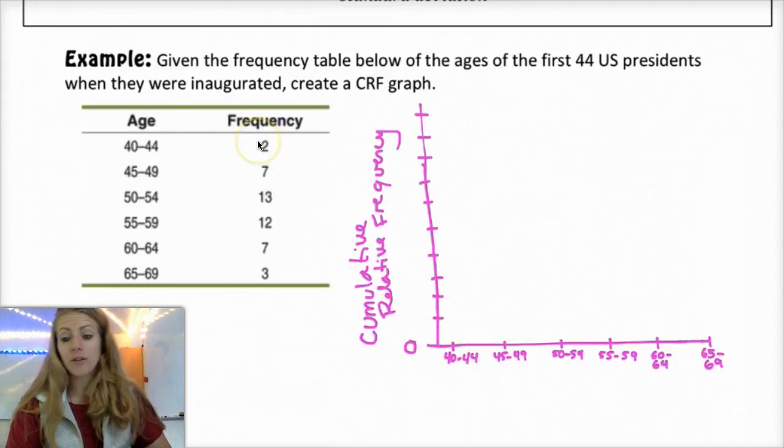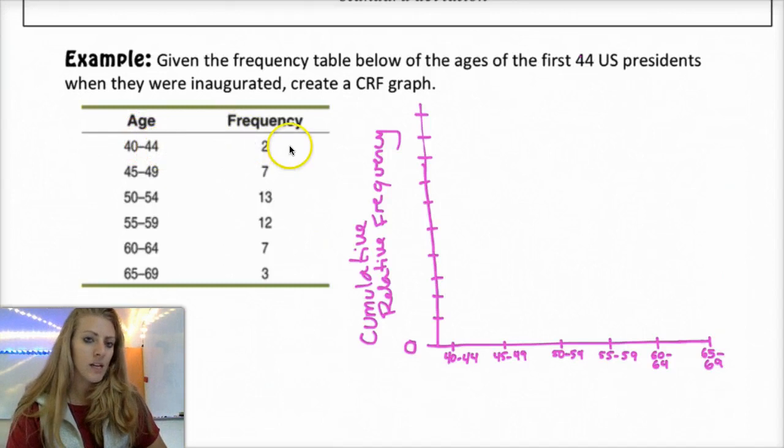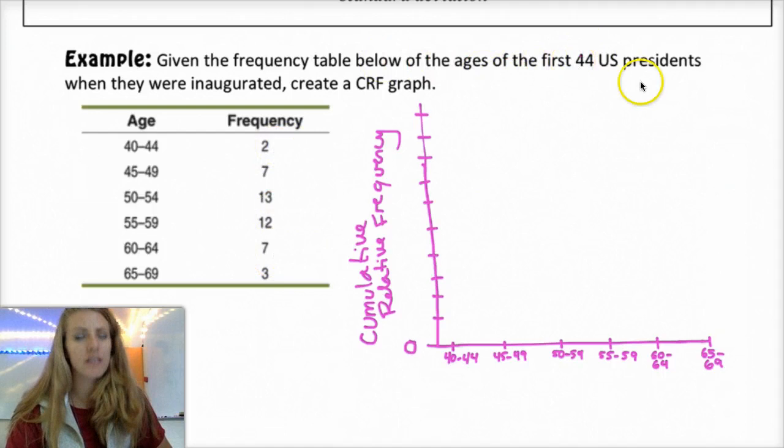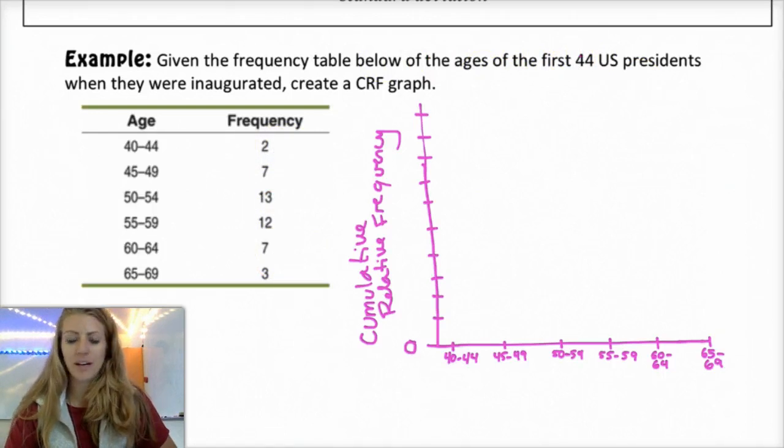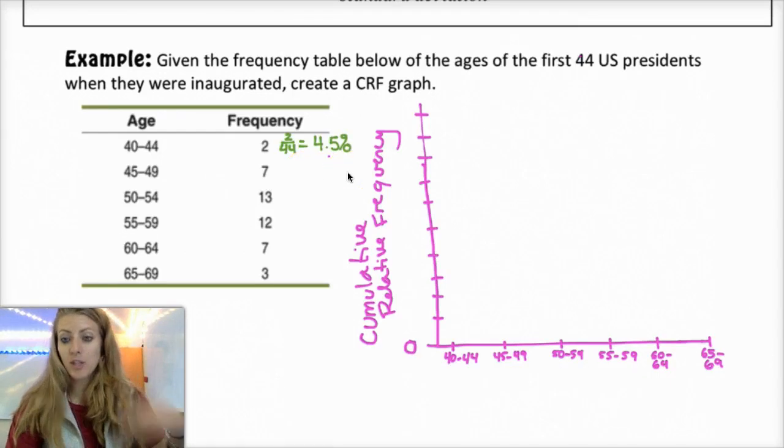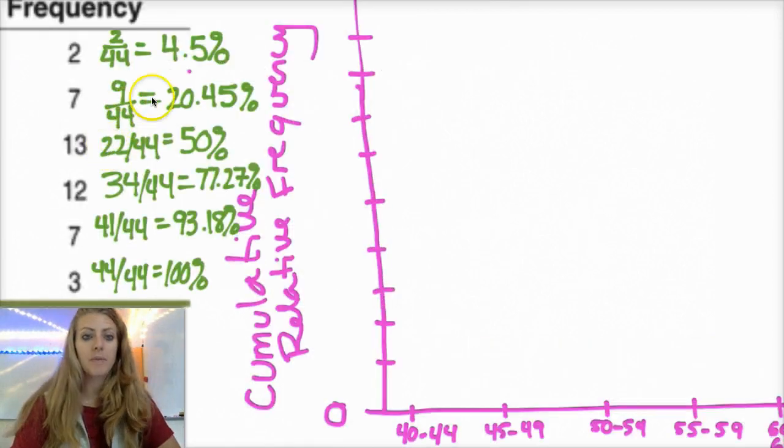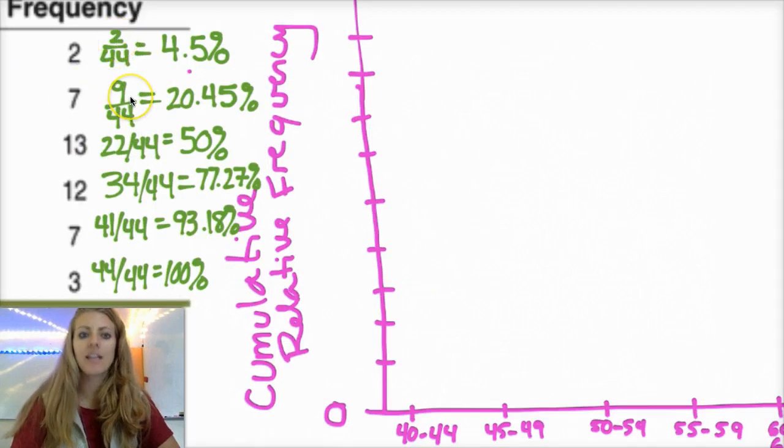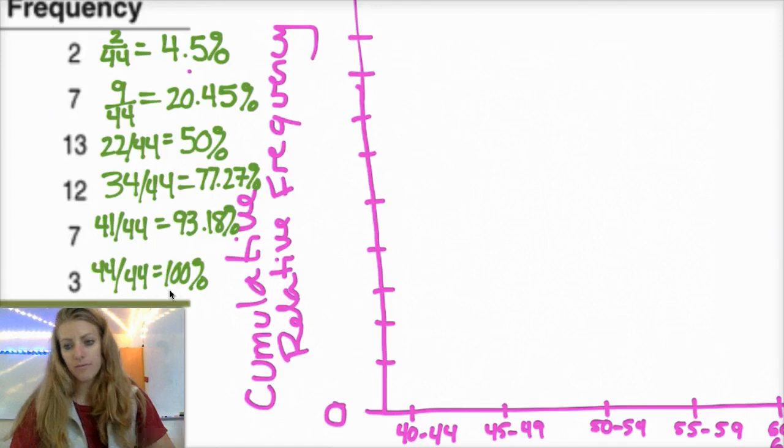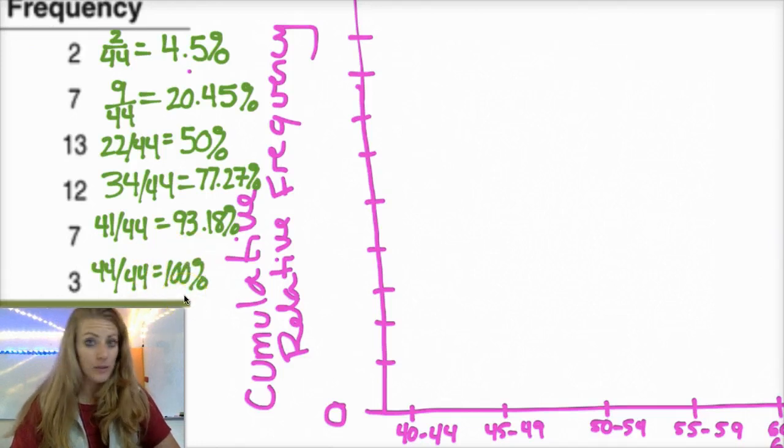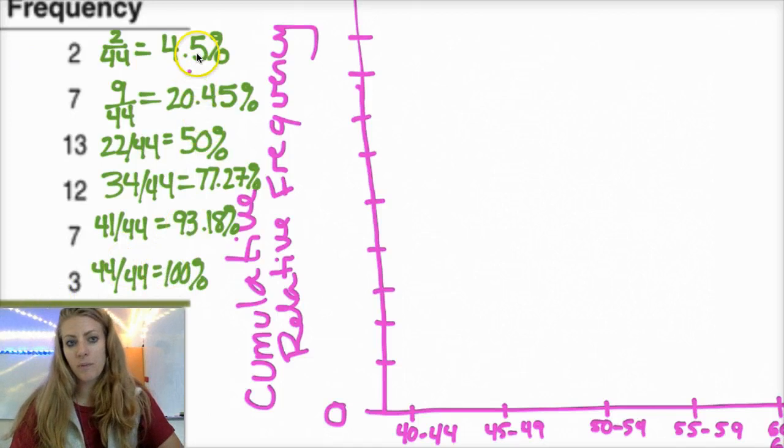So what we would do to create a cumulative relative frequency graph is we make a chart with the cumulative relative frequency on the y-axis and the ages of the presidents on the x-axis. For example, this value 2, that means we have two presidents between the ages of 40 and 44. And 2 out of the 44 presidents is 4.5%. Then my next value, because it's cumulative, I'm including the people that I've already counted. So rather than 7 out of 44, I'm actually doing 7 plus 2 out of 44, so 9 out of 44. If you're doing something like this, you should always end up at 100% by the end, because you are accumulating all of the data.